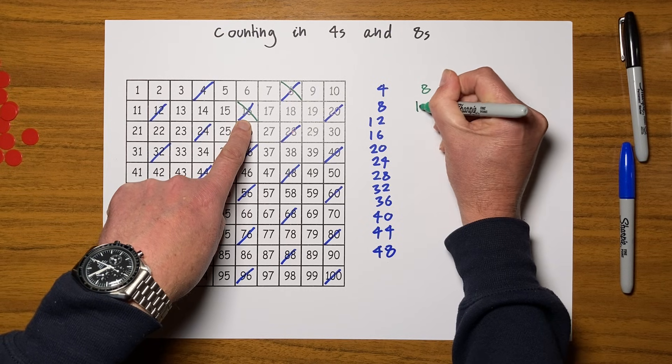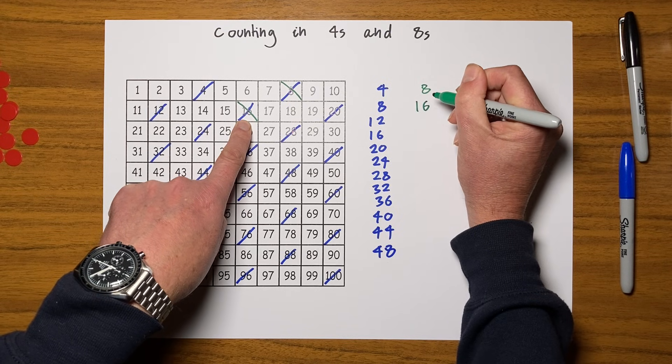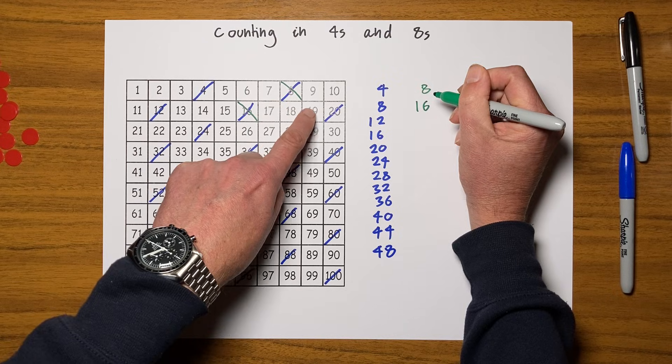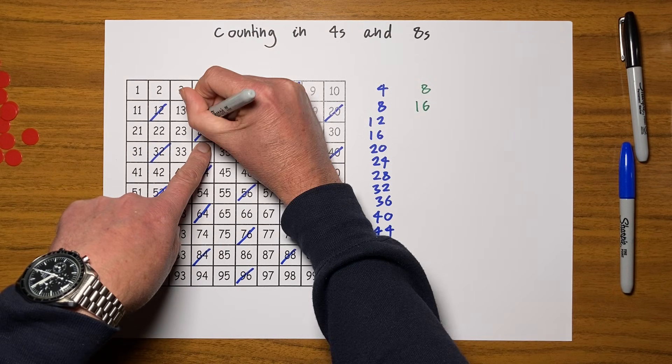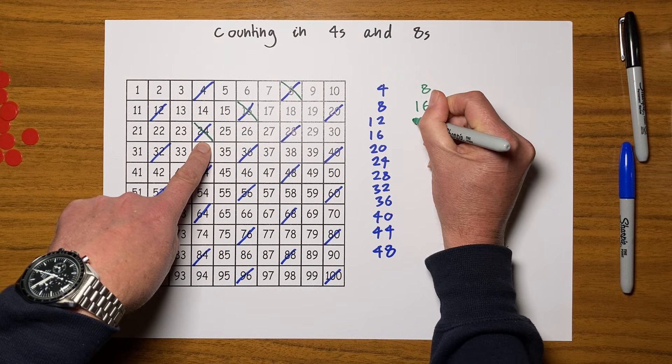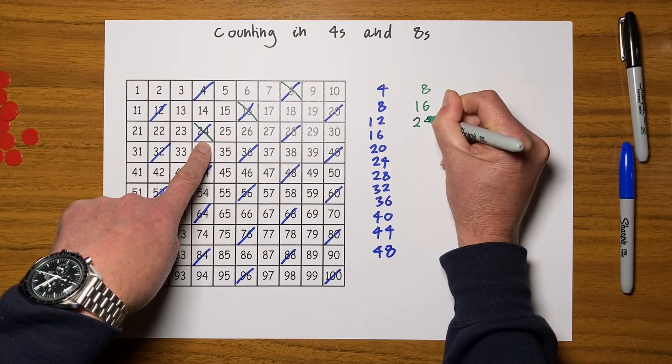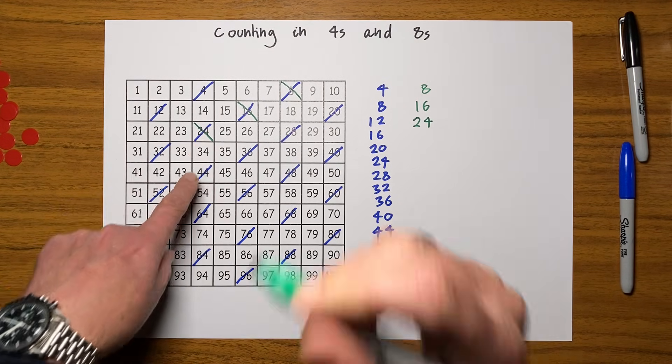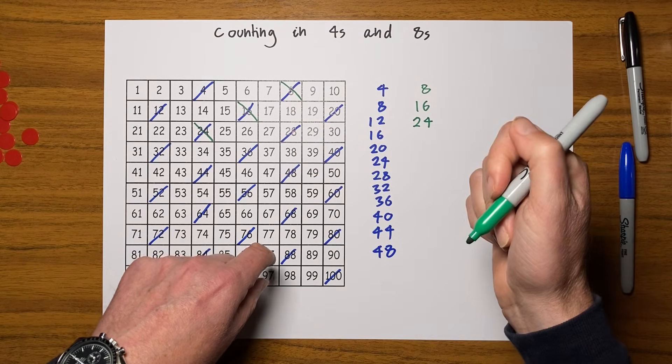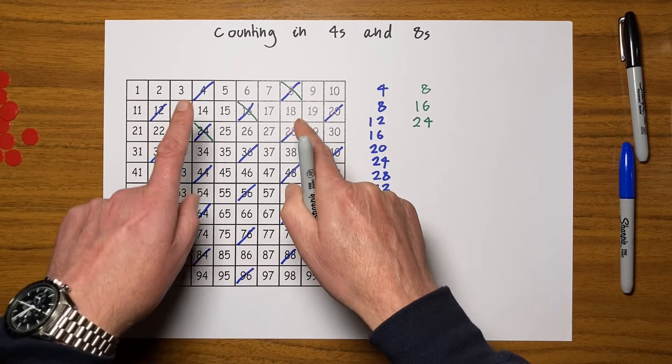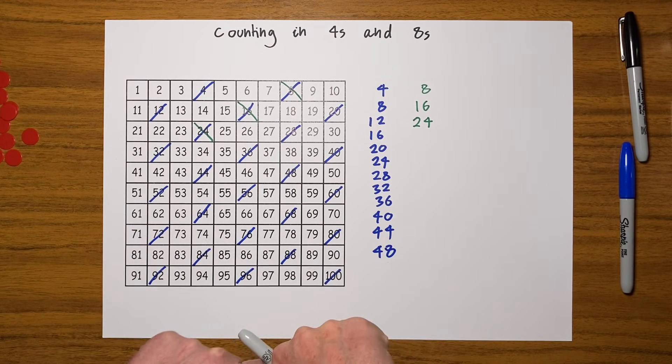I wonder if that will keep on happening. Let's try it one more time. One, two, three, four, five, six, seven, eight. Yes it does, and it's always going to land on one of the squares I've marked with a four, because four add four makes eight. So every two lots of four, I'm going to get one eight.